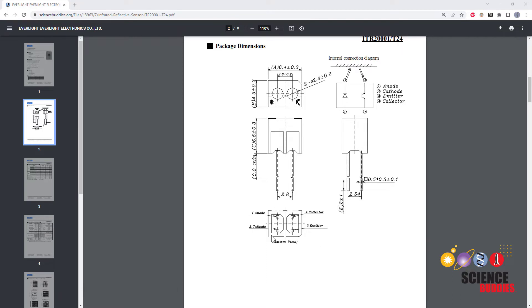And this diagram here shows us a bottom view of the physical sensor where you can see that tiny notch in one corner that again labels the four pins: one anode, two cathode, three emitter, four collector. So we can use this information to figure out how to hook the sensor up to the Arduino.